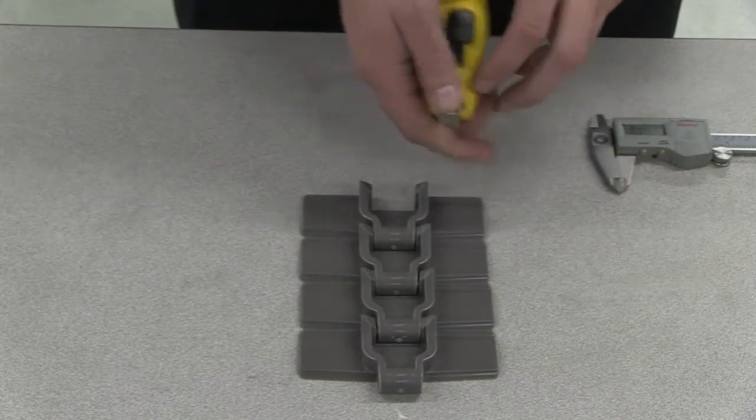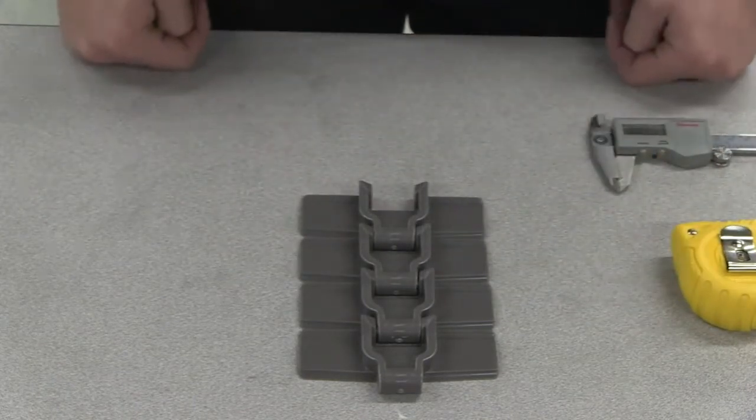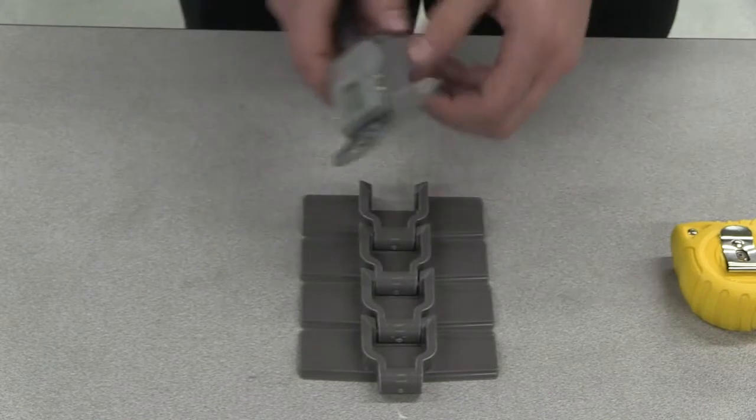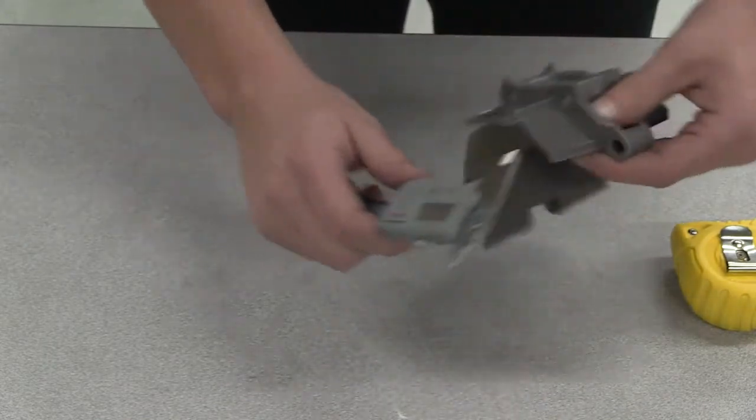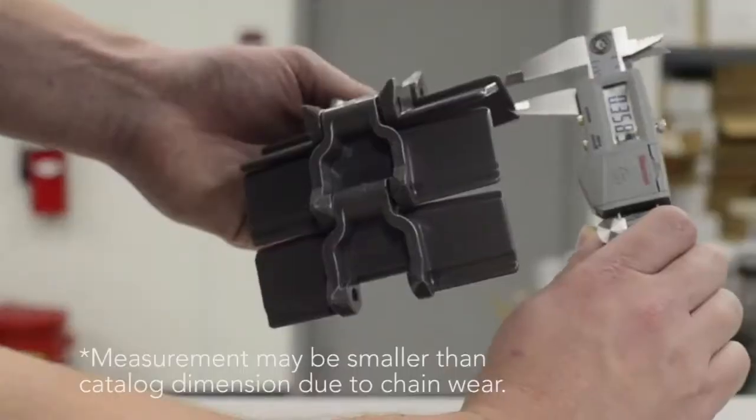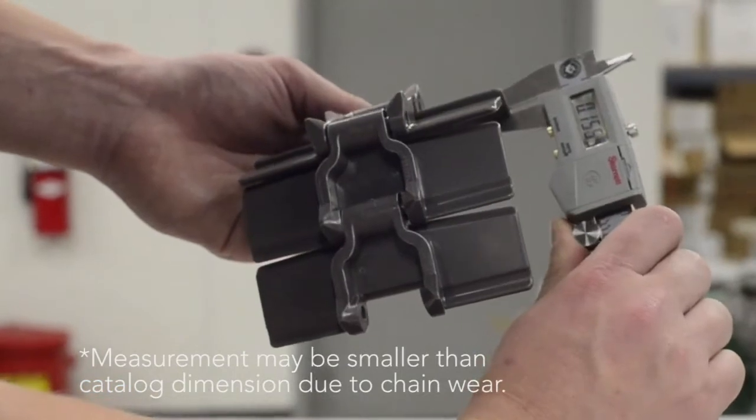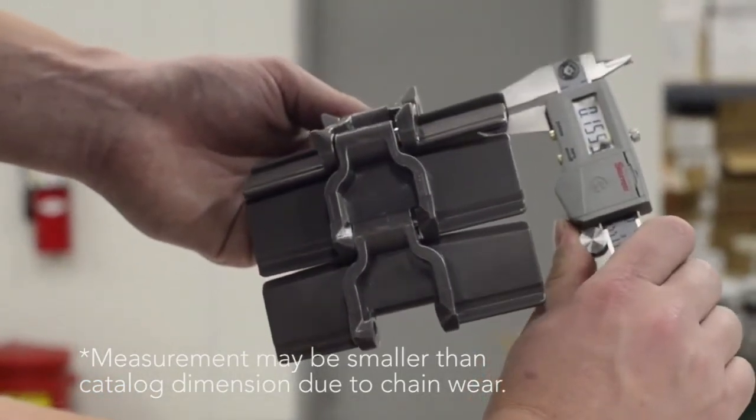For plate thickness, it is best to use a digital caliper. Measure the thickness of the outer part of the chain flight. Please note that if the chain has been in use for an extended period of time, this measurement may be smaller due to wear.